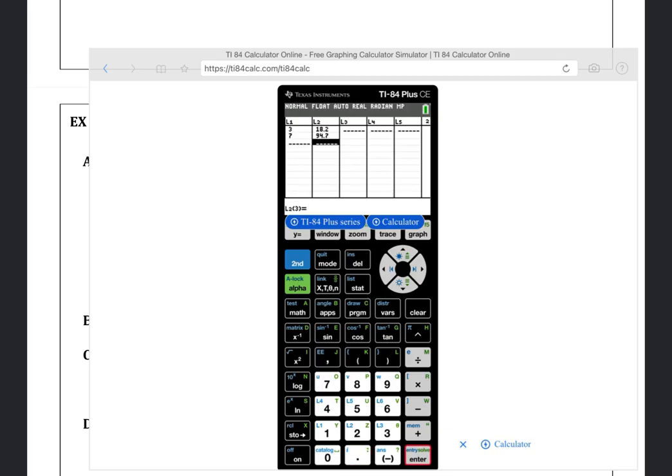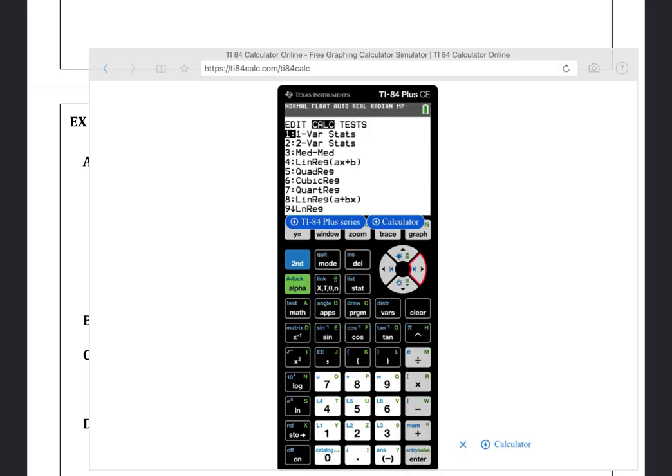Then we want to check that we're using exponential regression, and my notes say we should press stat, arrow over to calculate, and then scroll down to zero, which gives us exponential regression. You can see if the x list is coming from L1 values, and the y list is coming from L2,